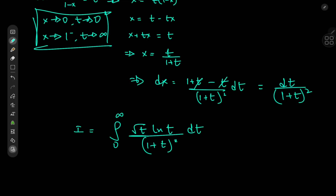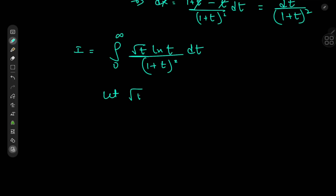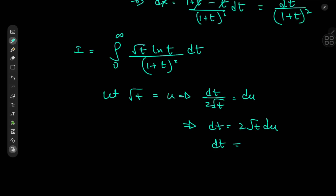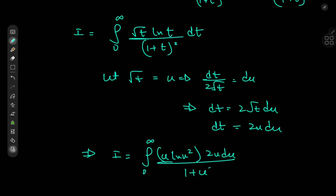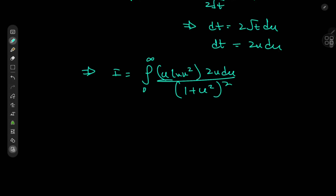We can also get rid of the root t term by letting root t equal u, which implies dt equals 2 root t du, i.e., 2u du. The limits are unaltered, so the integral becomes the integral from 0 to infinity of u times log u squared, times 2u du, divided by 1 plus u squared squared. Since log u squared equals 2 log u, we get 4 times the integral from 0 to infinity of u squared log u divided by 1 plus u squared squared, du.